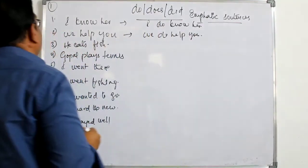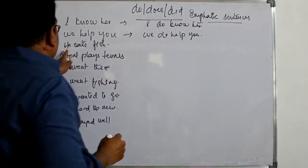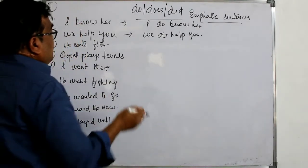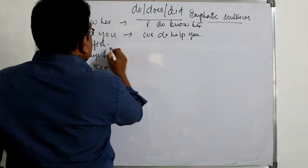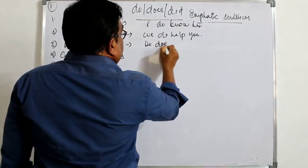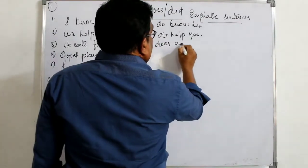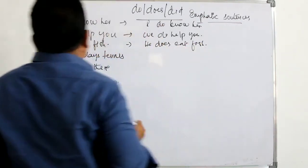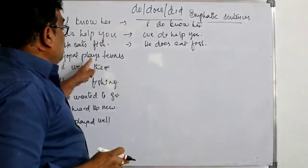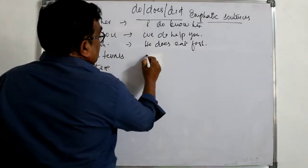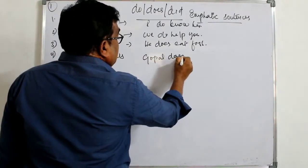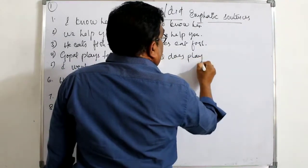Next example: 'He eats fish.' Because it is a third person singular subject, I will use does. The emphatic sentence is: 'He does eat fish.' Another example: 'Gopal plays tennis' becomes 'Gopal does play tennis.'